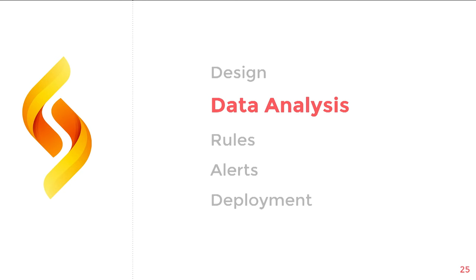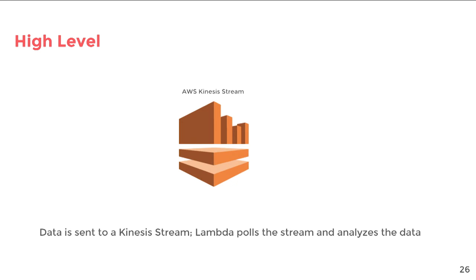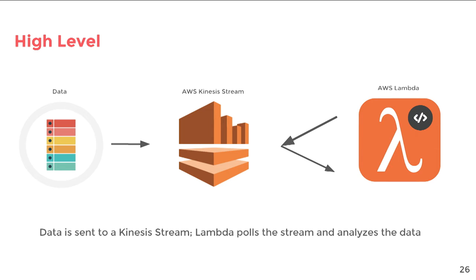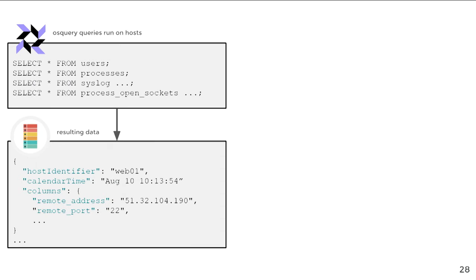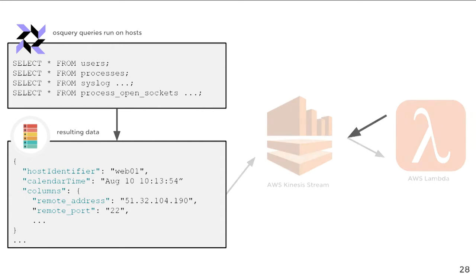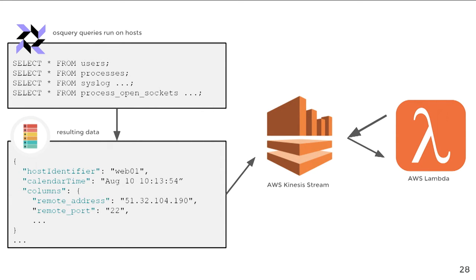You might be wondering how we get data into StreamAlert. We have two ways. The first is by using a service called AWS Kinesis. Kinesis provides a stream to send data into from thousands of data producers. As data is emitted into the stream, Lambda pulls new logs, matches them against rules, and then an alert is sent if a match is found. The Airbnb security team released a blog post on Medium that outlines how we use OSQuery to send logs into Kinesis for analysis. OSQuery allows us to query data from hosts — such as installed users, running processes, and much more. These queries execute on specified intervals and emit JSON data into our Kinesis stream, which is then analyzed by Lambda.